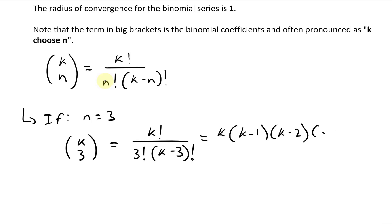I'm just going to stop there but write factorial so it keeps going on. And then we divide this by 3 factorial times k minus 3 factorial.